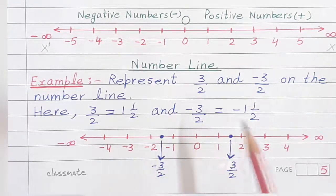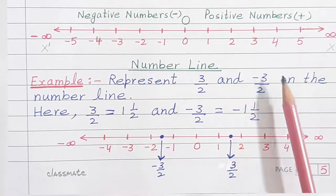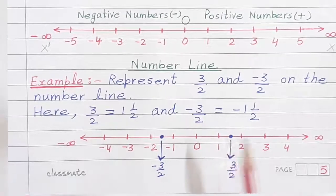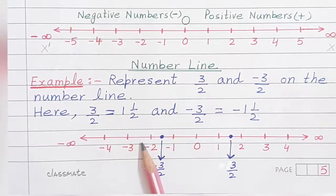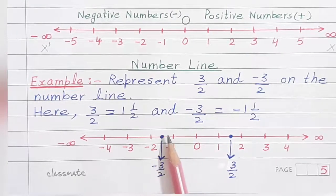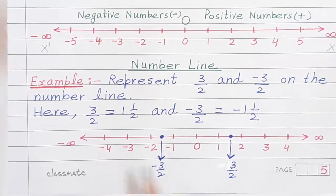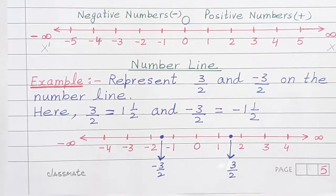Now let us see how to represent minus 3 upon 2 on the number line. Minus 3 upon 2 also lies between minus 1 and minus 2. So here again, we will take the midpoint of minus 1 and minus 2. That is minus 3 upon 2. So that is how we can represent rational numbers on the number line.